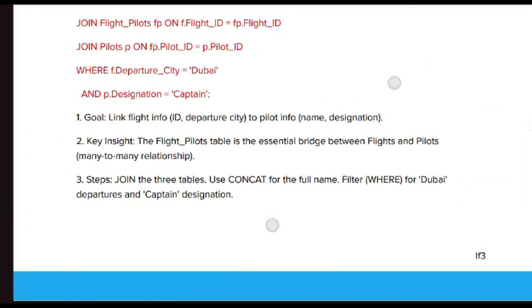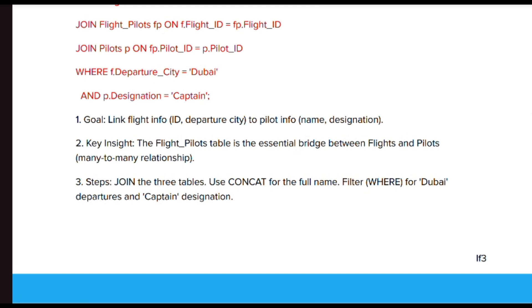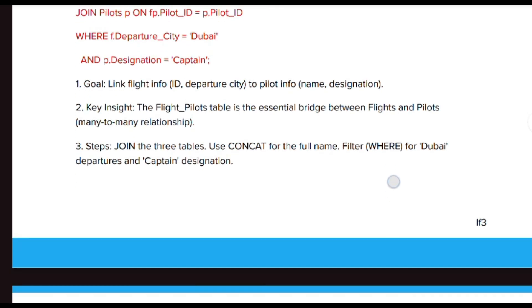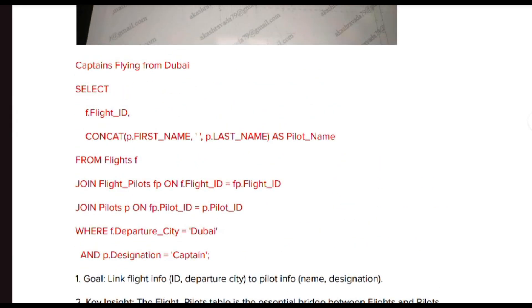First you have to link flight info — like flight ID and departure city — to the pilot info which includes name and destinations. The pilot table is an essential bridge between the flights table and the pilots table. The steps are: join the three tables, use CONCAT for the full name, and filter with WHERE for Dubai. Select flight_id and CONCAT(first_name, ' ', last_name) AS pilot_name.